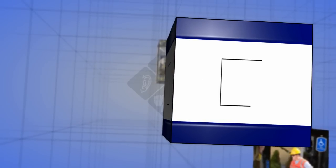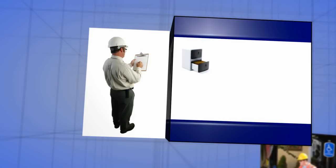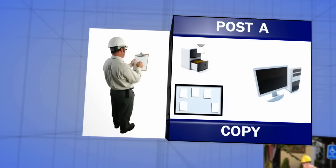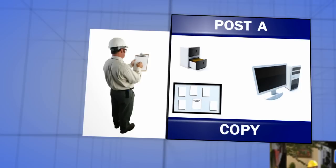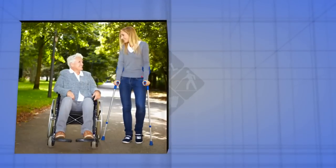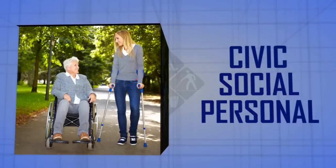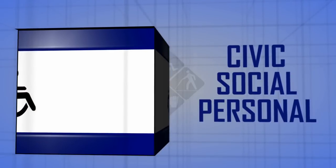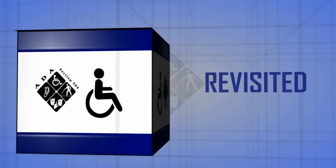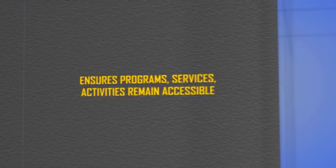Regardless of your size, in the interests of transparency, keep a copy of the self-evaluation available in your files for public review. Also, post a copy on your official website and other venues where individuals who do not have access to a computer can obtain the information. As a public entity, it is your responsibility to ensure that individuals with disabilities can participate in all aspects of their civic, social and personal life within your community, both now and in the future. Consider your completed self-evaluation a living document to be revisited and updated on a regular basis, to ensure your community's programs, services and activities remain accessible.